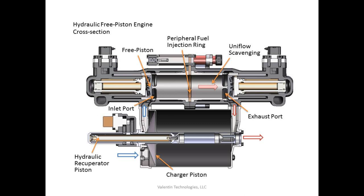This reciprocating motion of the piston is then transferred to the linear alternator, which is coupled with the piston. Due to the reciprocating movement of the permanent magnet attached to the connecting rod of the piston, there is a fluctuation of the magnetic field, which induces current and voltage in the coil and electricity is produced, which is further stored in an accumulator for further use.